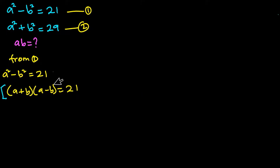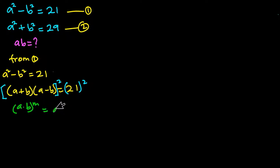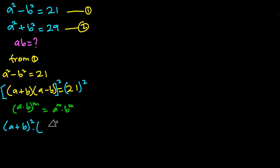I will square each side of the equation. Don't forget that when you have a times b to the power m, this is the same as a to the power m times b to the power m. I'll use this idea here, so we have a plus b to the power 2 times a minus b to the power 2, and this is equal to 21 to the power 2.